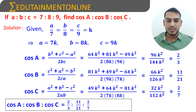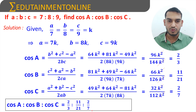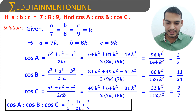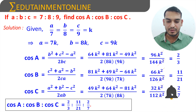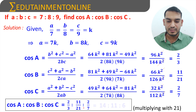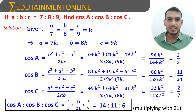Now we have to find cos A : cos B : cos C. We can write it as 2/3 : 11/21 : 2/7. Since the denominators are not equal, we take 21 as the LCM. Multiplying the first term by 7 and the third term by 3, the ratios become 14 : 11 : 6. Therefore, cos A : cos B : cos C = 14 : 11 : 6.